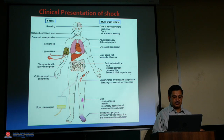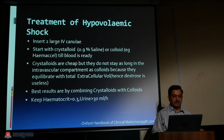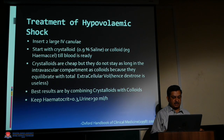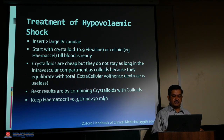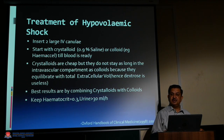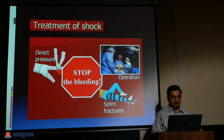Treatment of hypovolemic shock: insert two large IV cannulas and start with crystalloid (0.9 percent saline) or colloid (e.g., Hemaccel) until blood is ready. Crystalloids are cheap but do not stay as long in the intravascular compartment as colloids because they equilibrate with total extracellular volume; dextrose is useless. Best results are achieved by combining crystalloids with colloids. Keep hematocrit at 0.3 and urine output above 30 ml per hour. Apply direct pressure to stop bleeding.